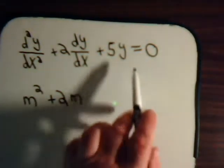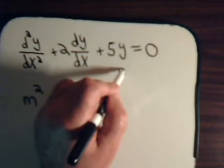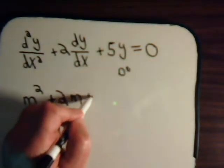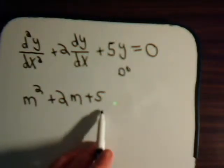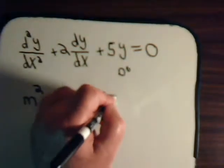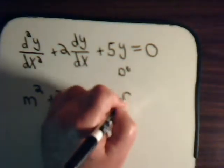And here we have, we can think of this as a differential to the zero power, so that would be plus 5, times m to the zero power, which of course is just 1. So here is the differential equation, set it equal to zero.